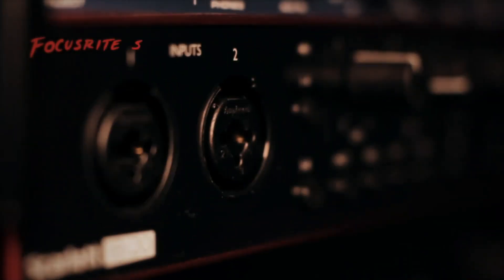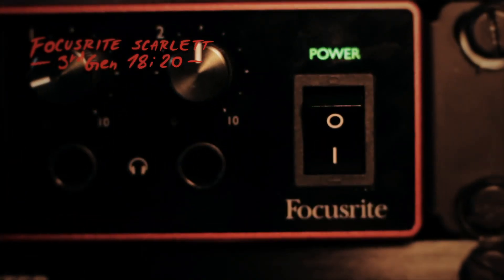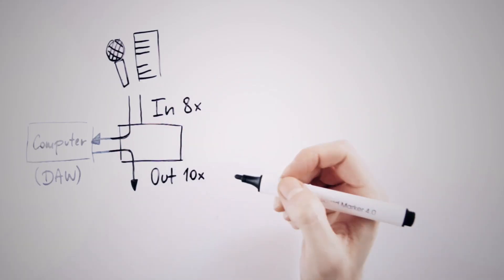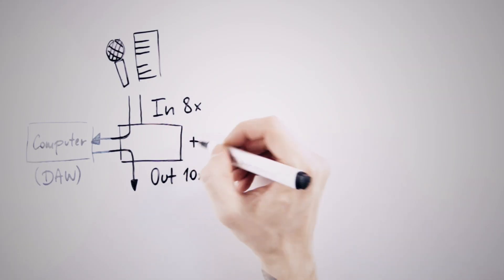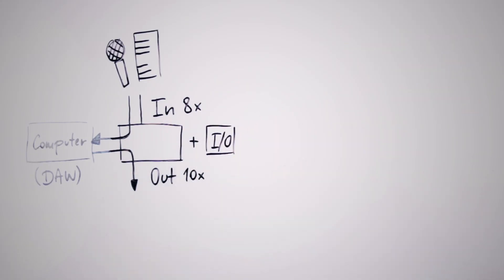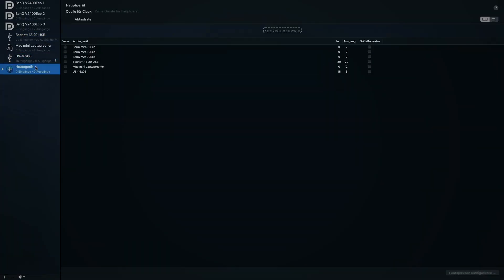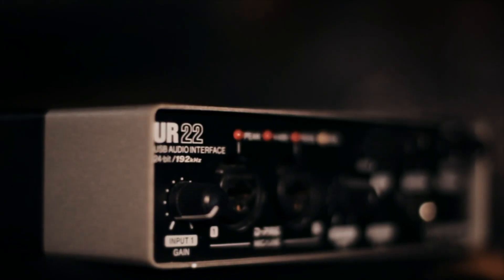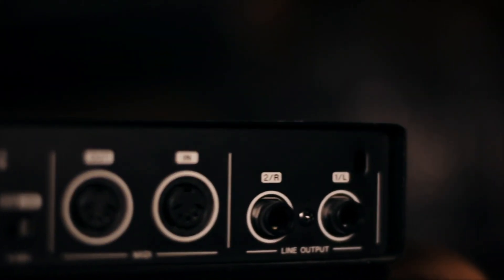In our case we are using the Focusrite Scarlett 3rd generation with 8 analog inputs and 10 analog outputs. Basically you can link more interfaces together, even if they are not digital, and the computer can see them as one device. If you are using a small interface with only two inputs and two outputs, DAW mixing probably won't work out.